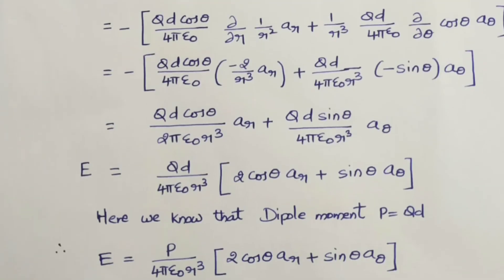Since the dipole moment p = qd, the final electric field equation is E = p / (4πε₀ r³) × (2 cos θ · âr + sin θ · âθ). This is our final equation for the electric field of a dipole.